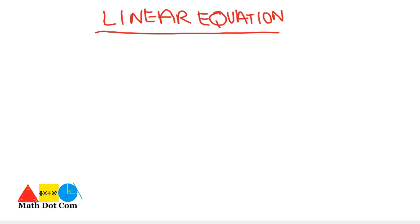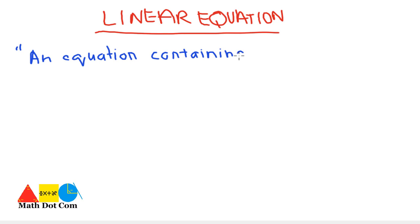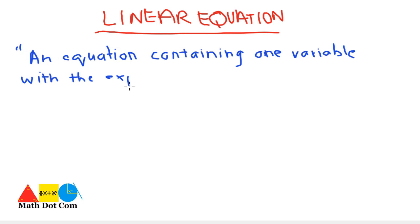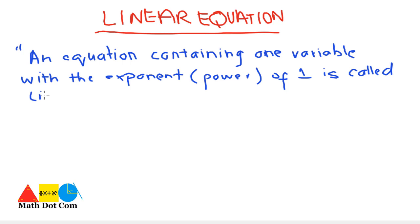A linear equation is defined as an equation containing one variable with the exponent of 1. Exponent means power. A variable with the exponent of 1 is called a linear equation. This is the definition of a linear equation and how its concept is defined.